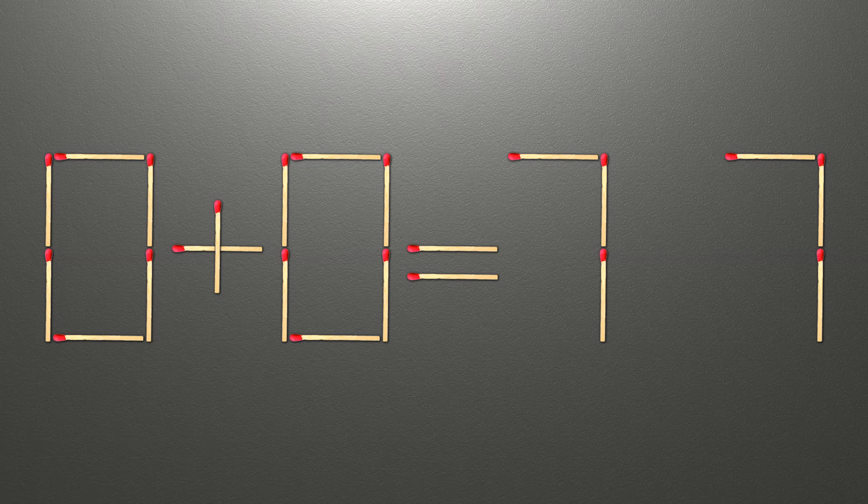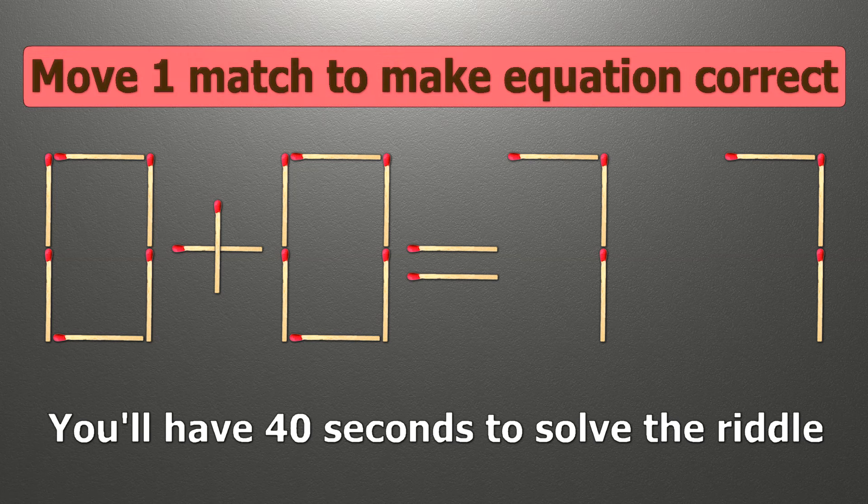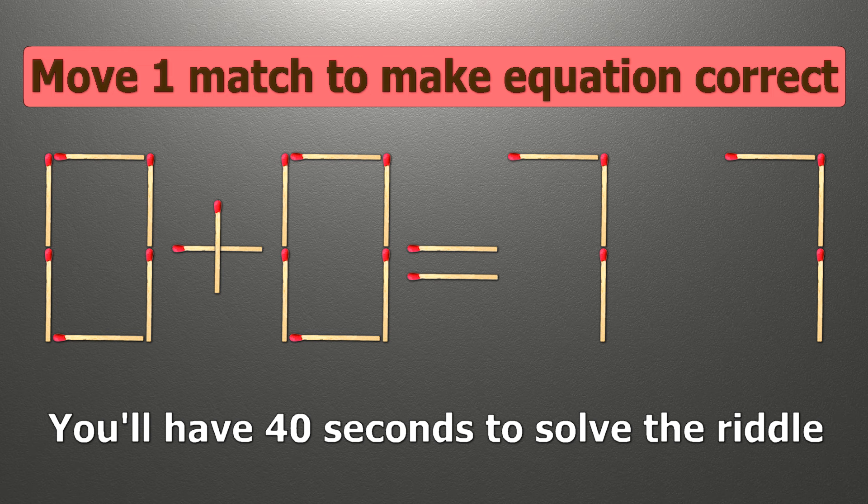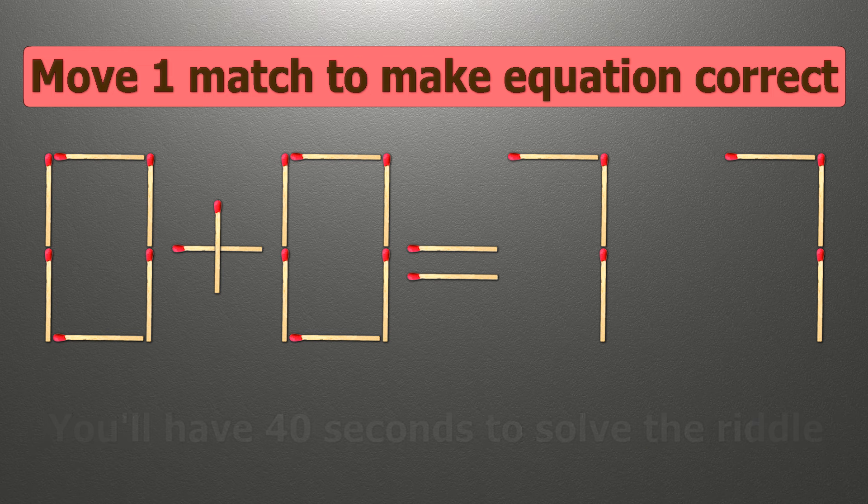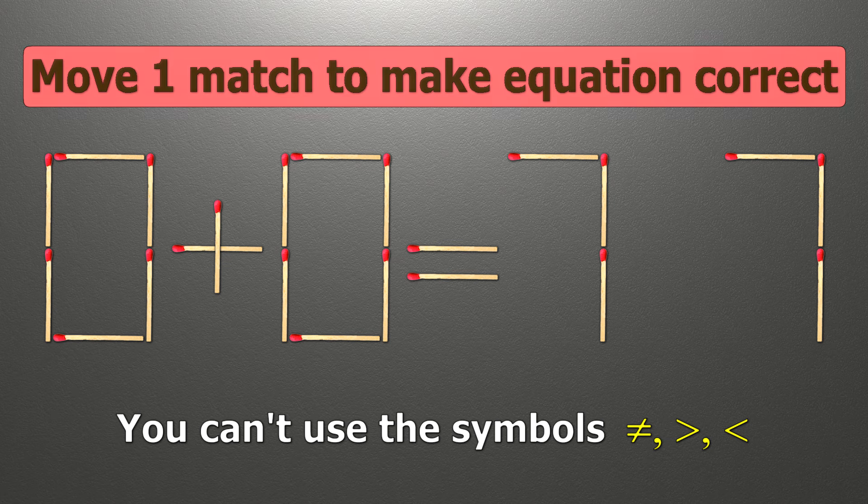Hello! We have the equality 0 plus 0 equals 77. Our equality is wrong. We need to move one match to make our equality correct.